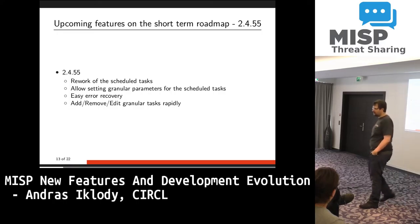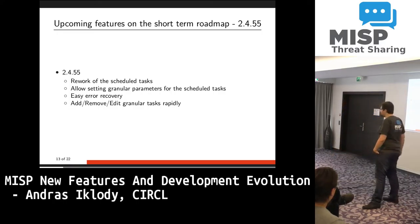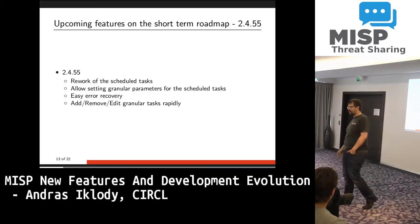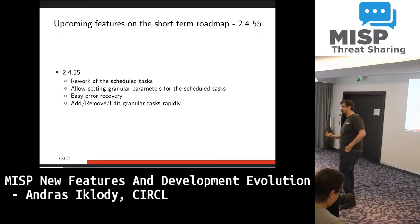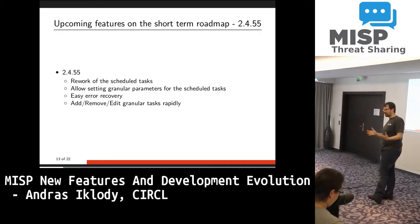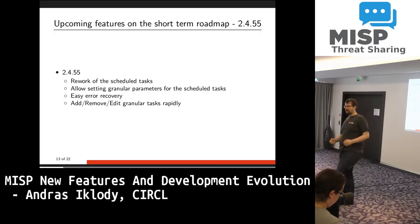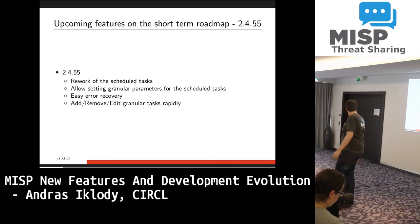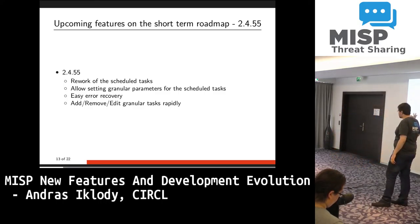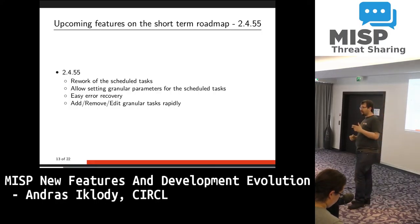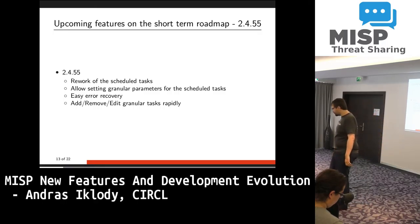For version 2.4.55, this is a rework of the scheduled tasks system into a much more granular and simpler interface. Right now the cached exports are very simple — export everything for every organization without filters, which is not very useful. We want you to be able to set up granular filters, export certain types with certain settings at regular intervals, and mix and match them. The same applies to feeds: pull feeds at different regular intervals instead of just pulling all feeds at once.